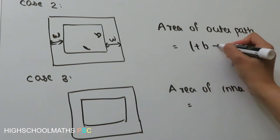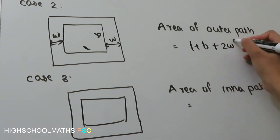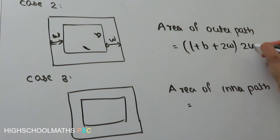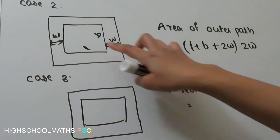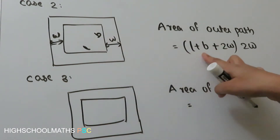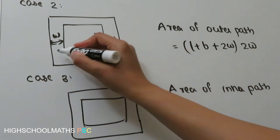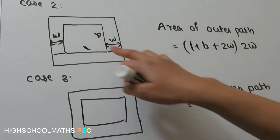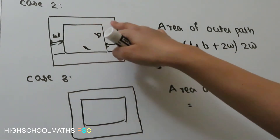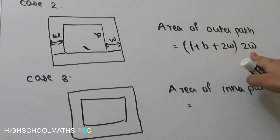Now for the second case, you can add 1W into 2W. If you are doing here L plus B, and if you have one W and one W, that's 2W. If you add this to the outer path, you can use 2W into 2W.